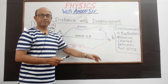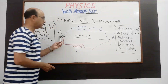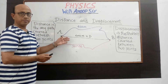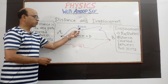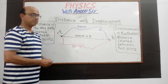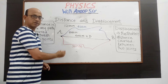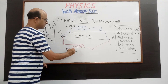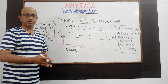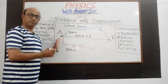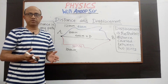तीनों लोग यहाँ पहुँच गए, अब तीनों वापस चलते हैं और यहाँ पर वापस आ जाते हैं — all three persons moving from B back to A. Total distance covered: first person 1200 meters, second 800 meters, third 1000 meters. लेकिन तीनों persons का displacement zero हो जाएगा, because they have come back to their original point. इस तरह से आप distance और displacement को समझ जाते हैं।